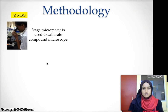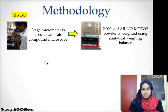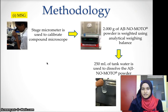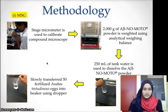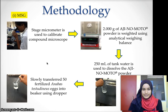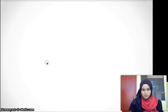For the MSG method, the stage micrometer is used to calibrate the compound microscope. 2g of Ajinomoto powder is weighed using an analytical weighing balance, and 200 ml of water is used to dissolve the powder. Then 50 fertilized Anabas testudineus eggs are slowly transferred into a beaker using a dropper.